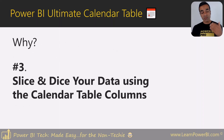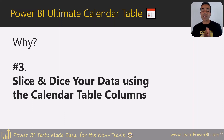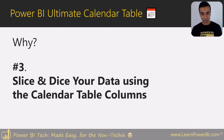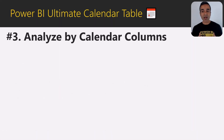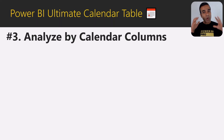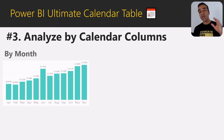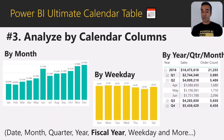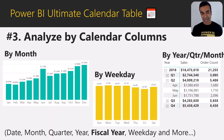Number three — we're doing countdown style. Number three is that a calendar table allows you to slice and dice your data using standard calendar columns. Once you have the standard calendar table, it will have fields that let you slice and dice by month, weekday, year, quarter, or any other combination available inside the calendar table.